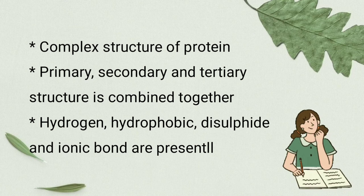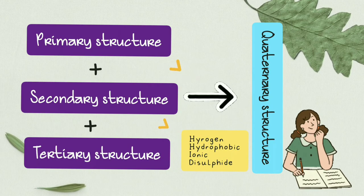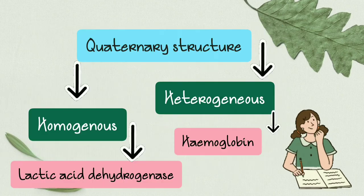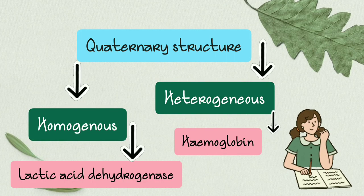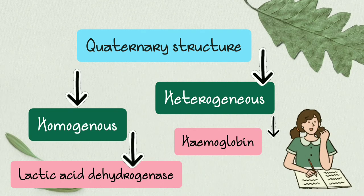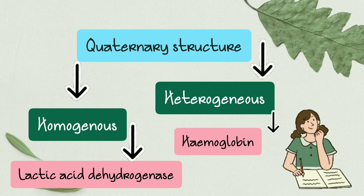Quaternary structure is the complex structure of protein. It is formed by the combination of primary, secondary, and tertiary structures. Hydrogen bonds, hydrophobic bonds, ionic bonds, and disulfide bonds are present. Quaternary structure is divided into homogeneous and heterogeneous types. An example of homogeneous is lactate dehydrogenase, and an example of heterogeneous is hemoglobin.